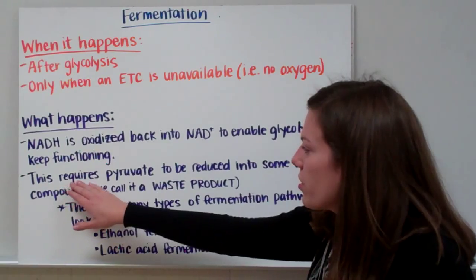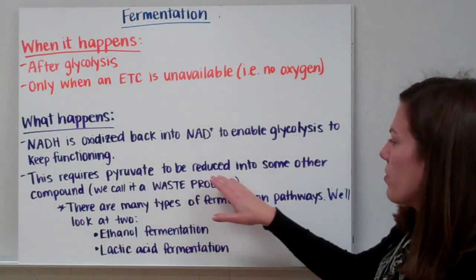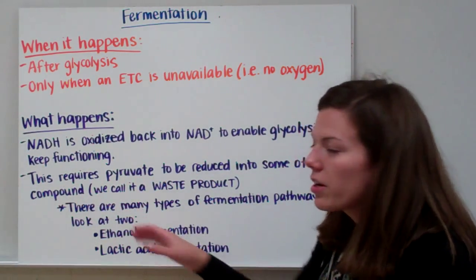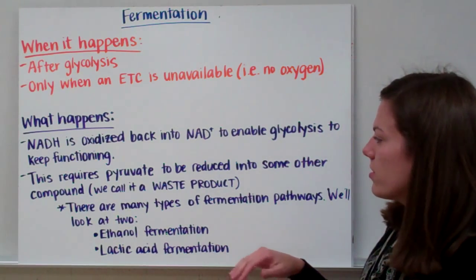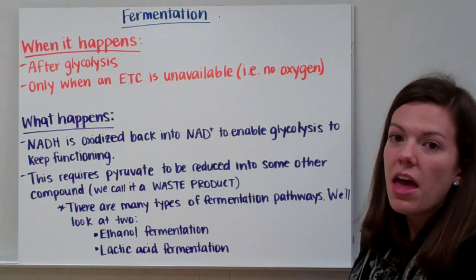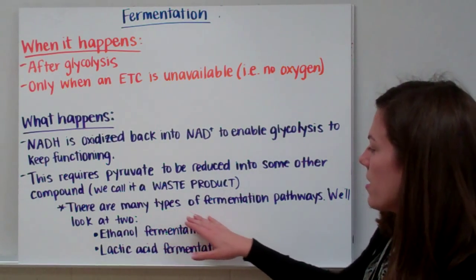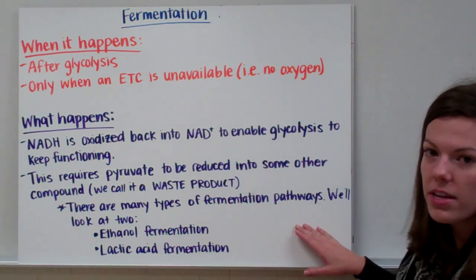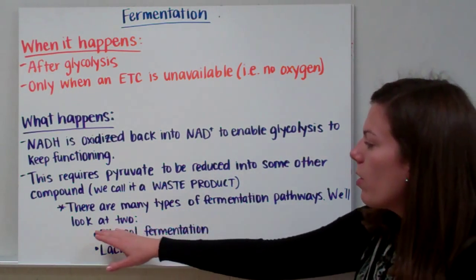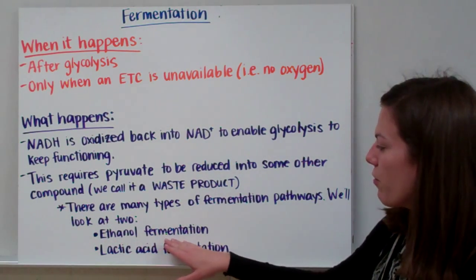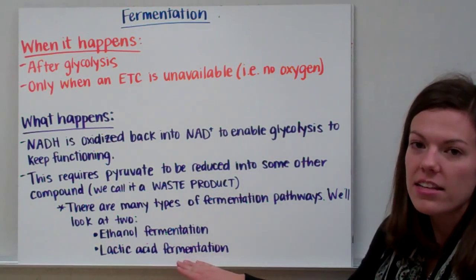This process is going to require pyruvate to be reduced into some other compound. We're going to change our pyruvate into something else, and we call this compound that we're changing pyruvate into a waste product. Now there are many types of fermentation pathways, and we're going to only look at two: ethanol fermentation and lactic acid fermentation.